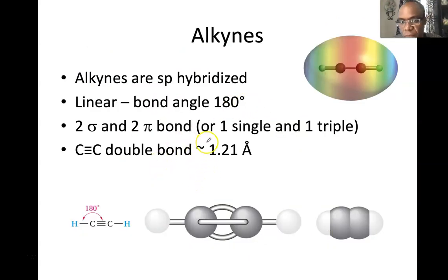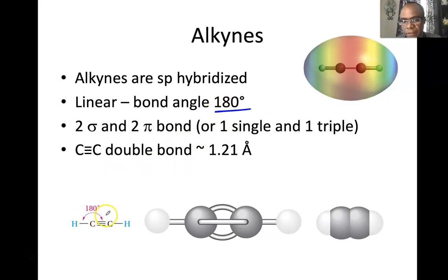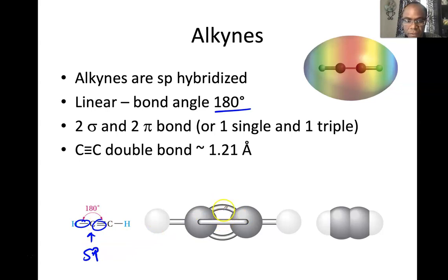When using a triple bond as dienophile, you're left with one pi bond in the product. Triple bonds are linear with a bond angle of 180 degrees, sp hybridization with two electron domains. There is one sigma bond and two pi bonds in a triple bond.